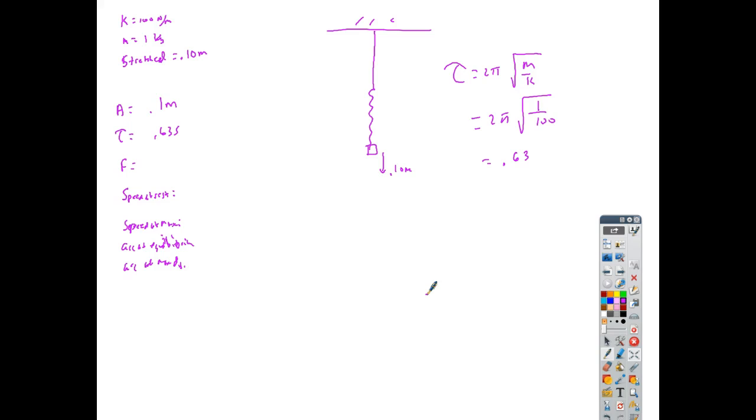If that's the period, what's my frequency? One over that. 1.6, 1.59 hertz. 2 times π divided by 10, 1 divided by shift answer. I'm getting 1.6. So I'm going to go 1.59 hertz. So that's my 1.59 hertz.